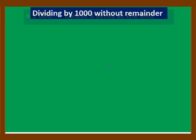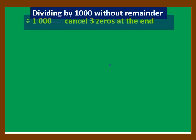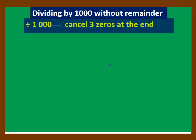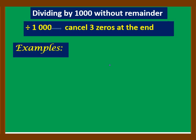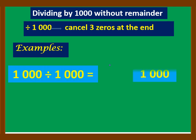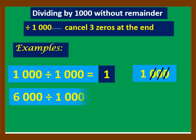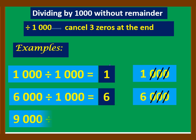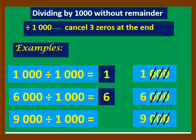In dividing by 1,000 without remainder, we simply rewrite the number and cancel or remove three zeros at the end. Example: 1,000 divided by 1,000 — rewrite 1,000 and cancel three zeros, so the answer is 1. And 9,000 divided by 1,000 — rewrite 9,000 and cancel three zeros, so the answer is 9.